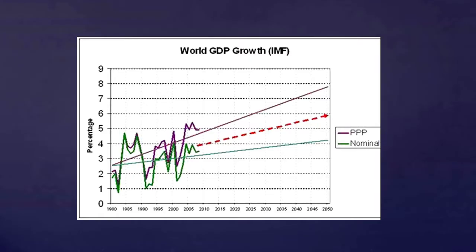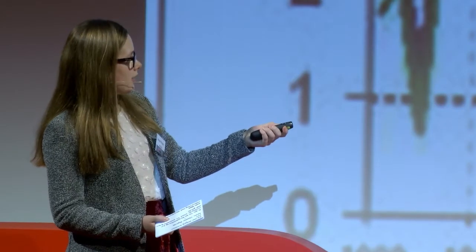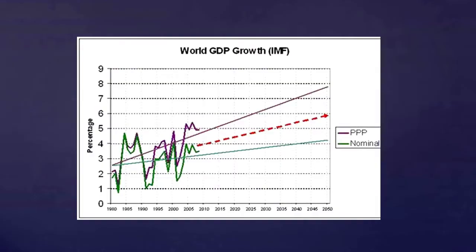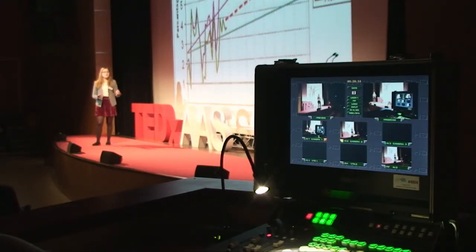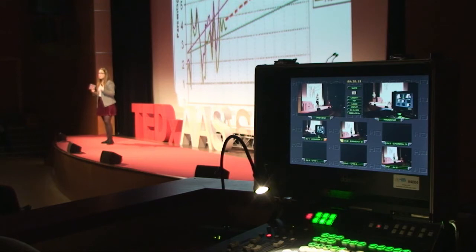This graph was published by the IMF, and it shows the possible GDP growth we can have. The green line shows our predicted GDP growth until 2050, and the purple line represents what we could achieve. As you can see, there's a big difference between what we could achieve and what we're predicted to achieve. We're not being efficient. We're not allocated our resources in the most efficient way. And I believe that this is because we are underutilizing our most abundant resource, which is women.